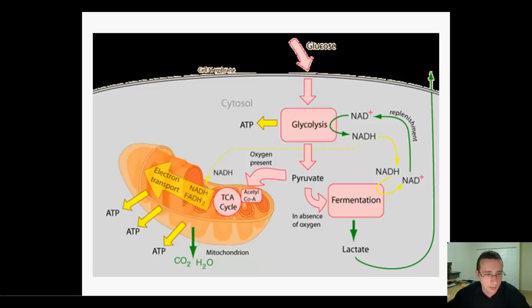You can see in this drawing that in the presence of air in the matrix you do the Krebs cycle and then the ETC which produces a lot of ATP. The fermentation process is when you don't have oxygen.